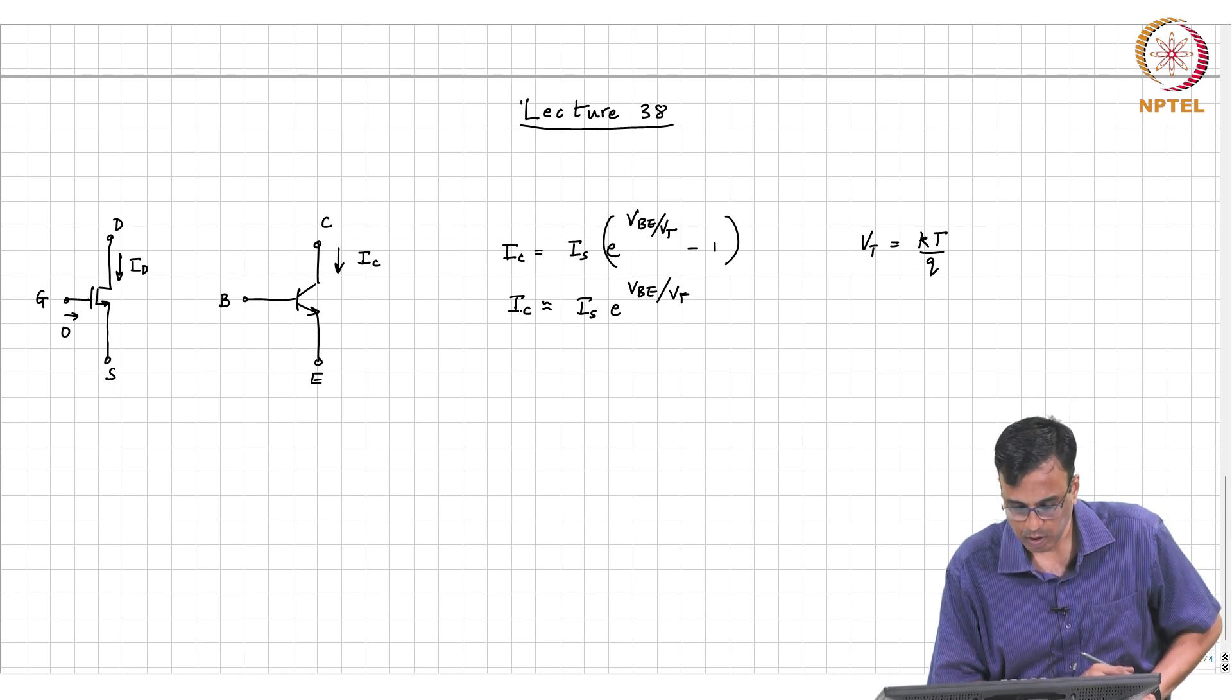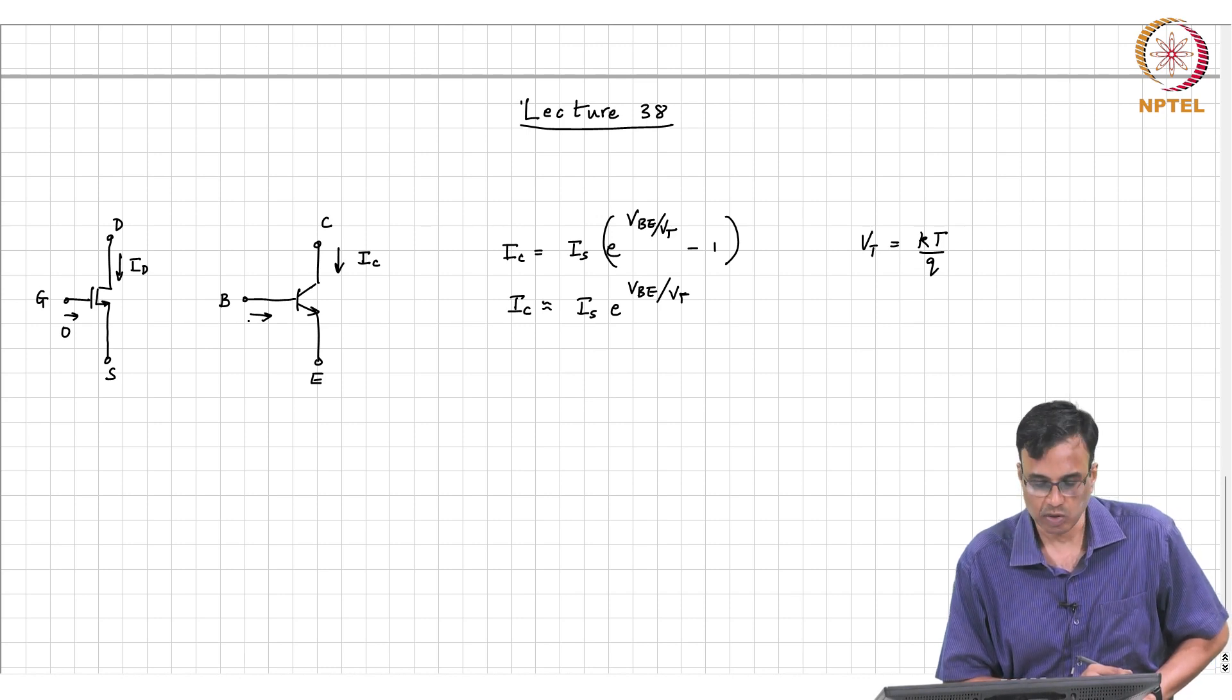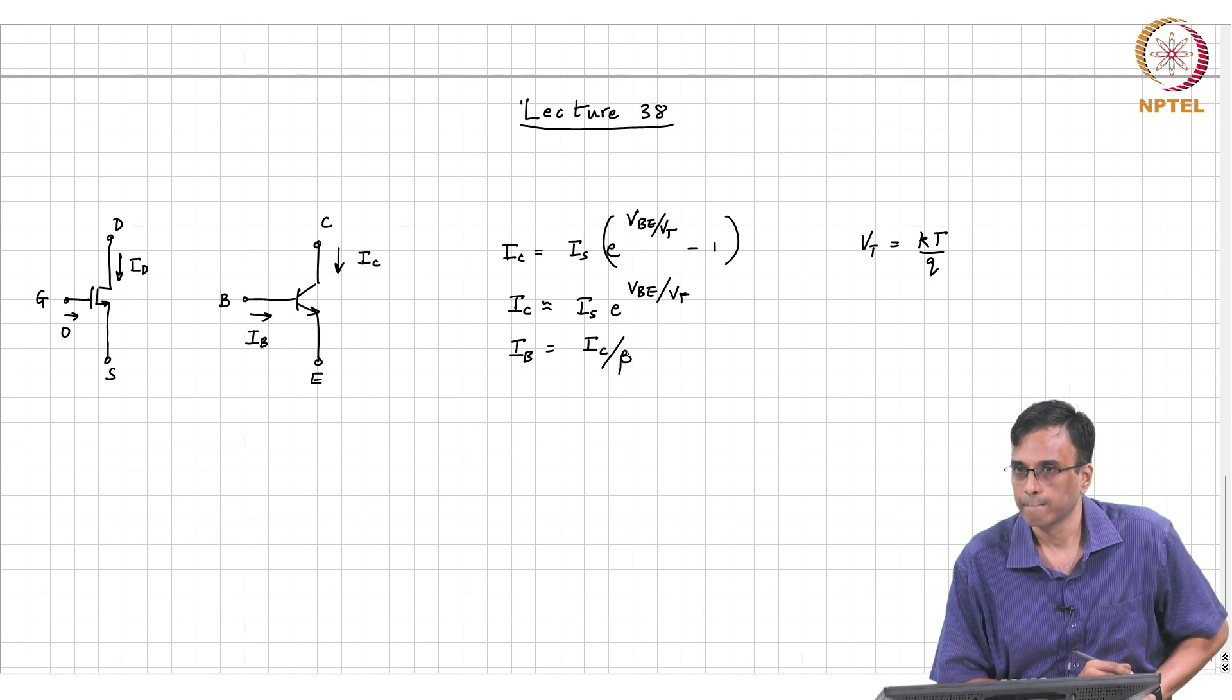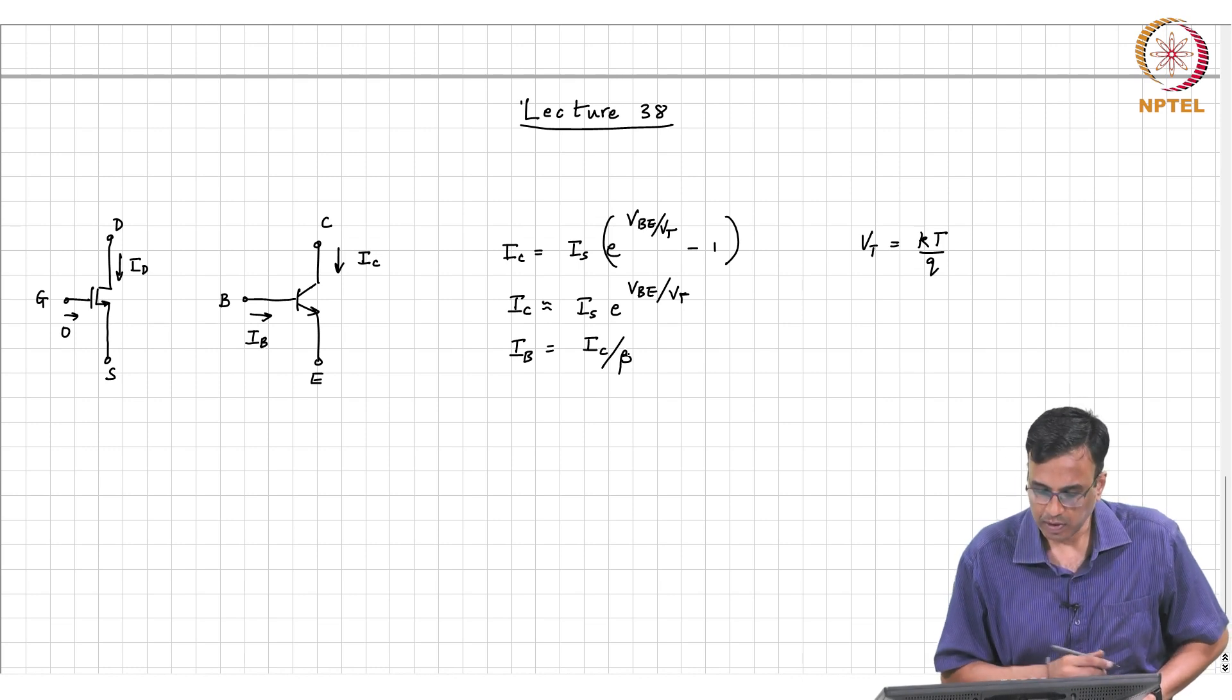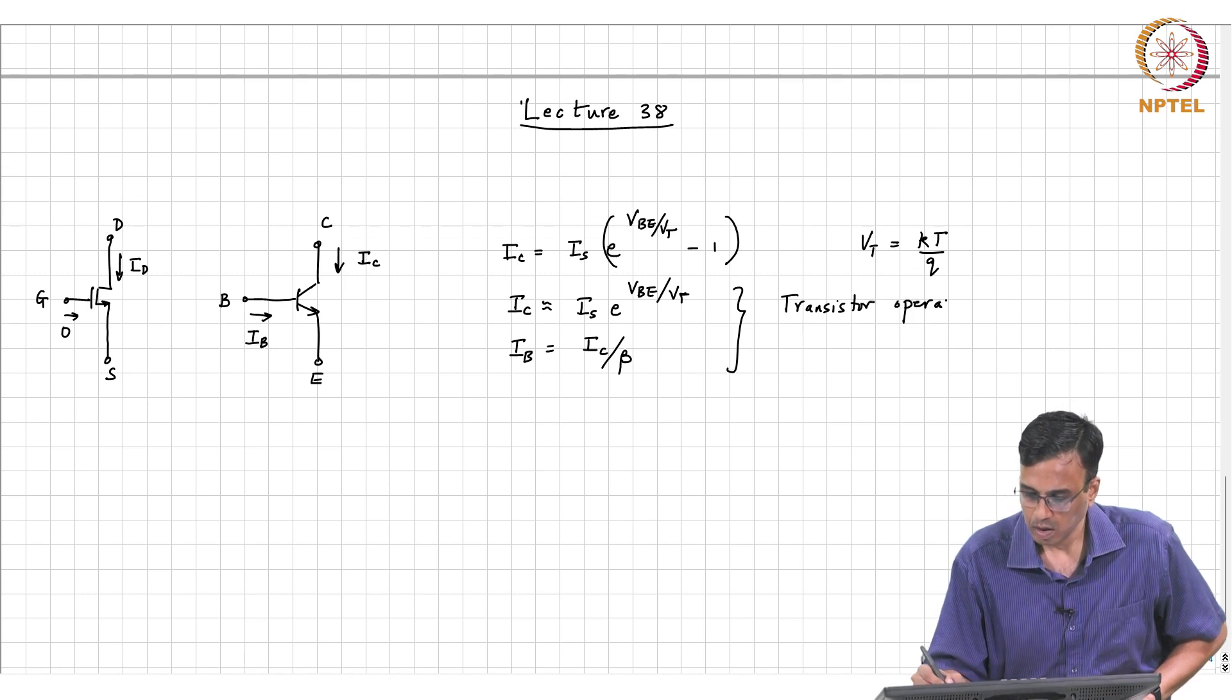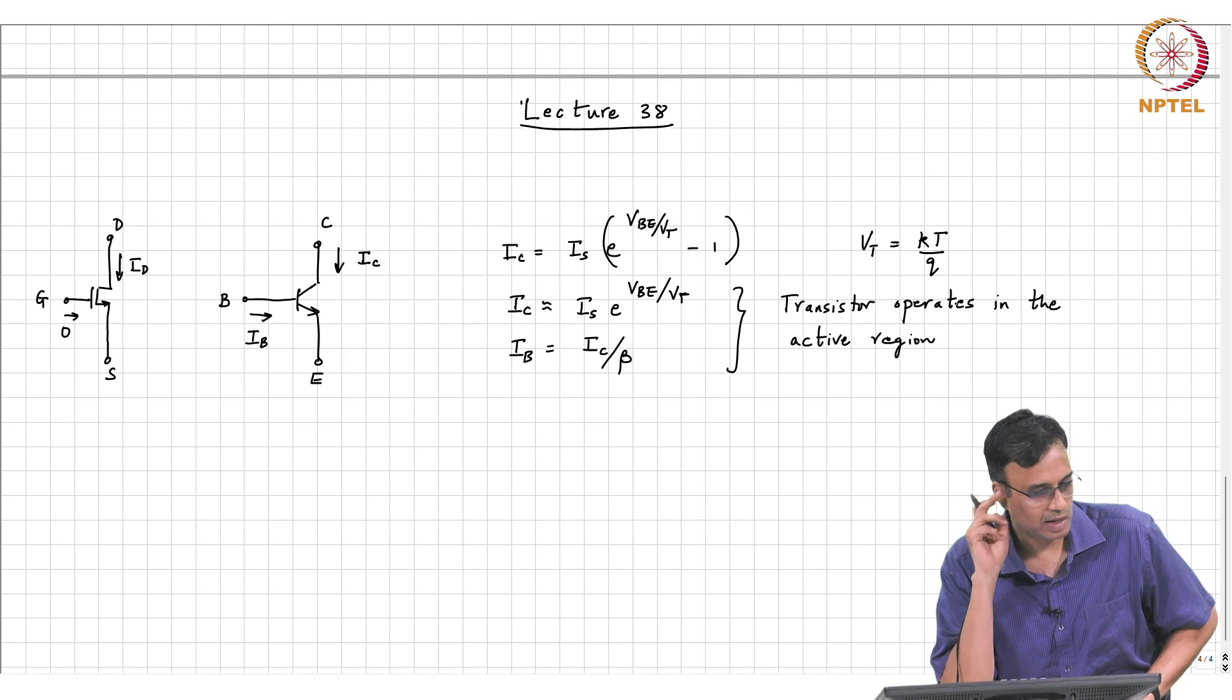Unfortunately, it turns out that the base current, which is analogous to the gate current in the MOS transistor, is not 0. It just turns out that IB is IC over beta, and all this is provided the transistor operates in the active region.